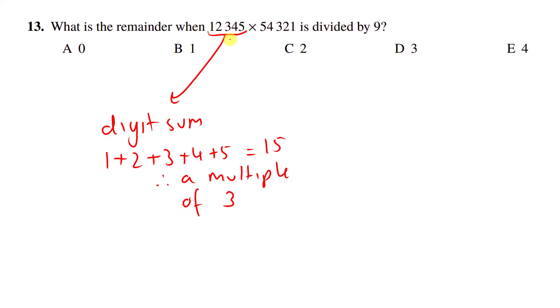So actually we can rewrite 12345 as 3n, some multiple of three. And this digit sum is exactly the same. It's just 54321. It's also 15. Therefore, 54321 is also a multiple of three. Let's write it as 3k.